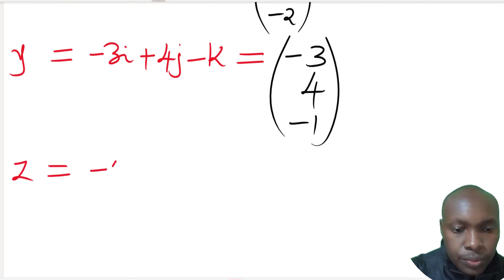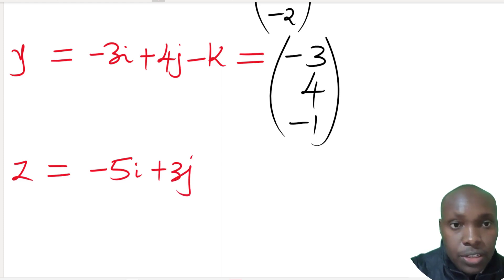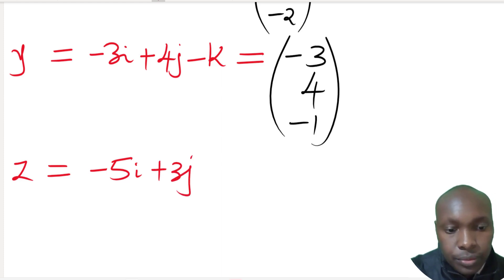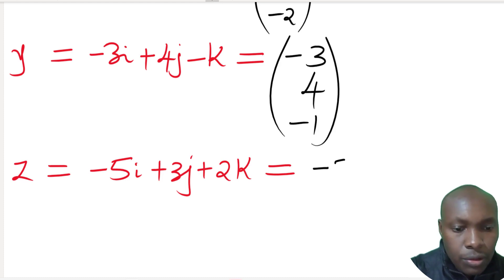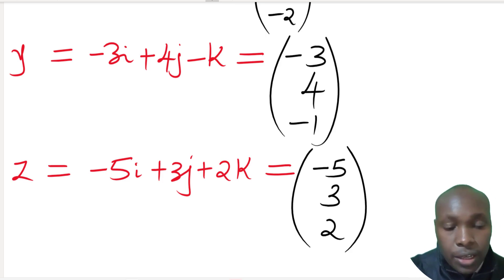z equals -5i + 3j + 2k. All components are already in the correct order i, j, k. Picking the coefficients: -5 for i, 3 for j, and 2 for k.